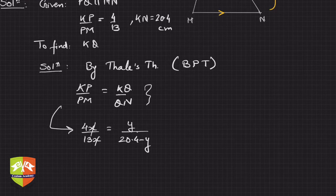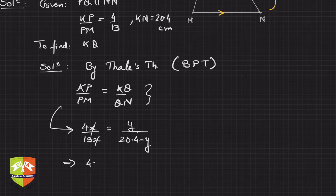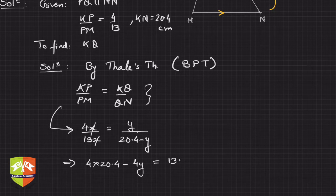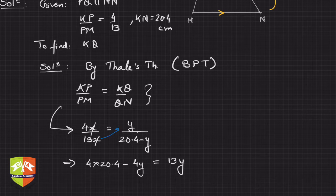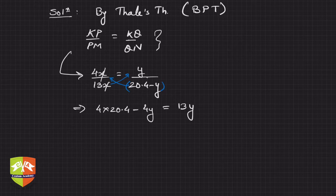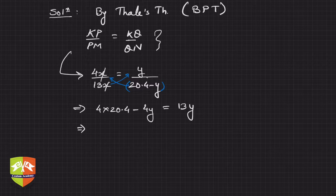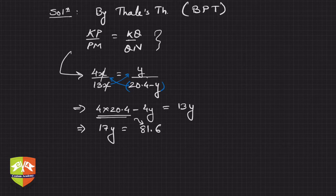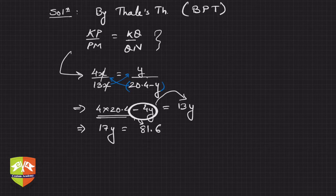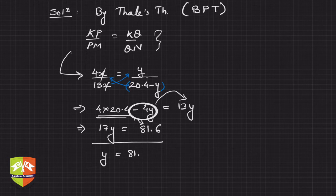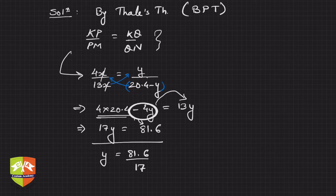x gets cancelled, so it is a simple linear equation in y. So it is 4 times 20.4 minus 4y—I'm now doing cross multiplication—equals 13y. This thing goes and multiplies with this; this thing goes and multiplies with this. Hence, the result is 17y equals 81.6. 4 into 20.4 is 81.6, and then I took this minus 4y and added it to 13y. So y equals 81.6 upon 17, which comes out to be 4.8 centimeters.